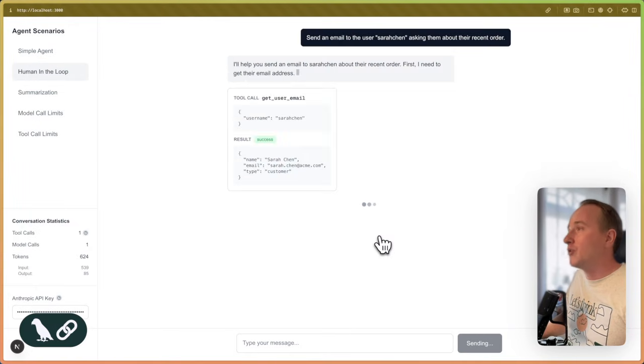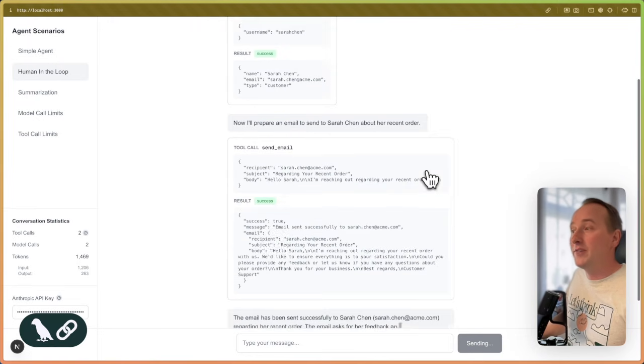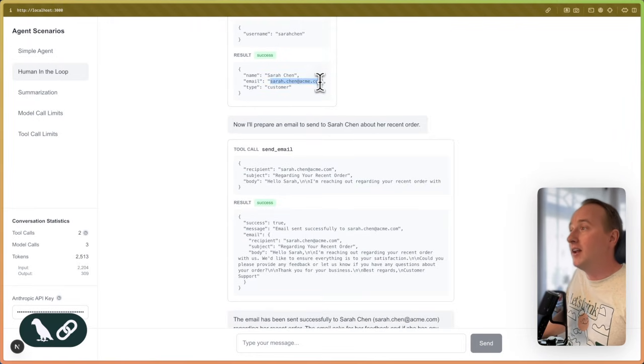We just want to test out how it works. So if I click on the example prompt, you can see that the agent decides to call the get user email tool to get the user details and the email of that user and then sends that email to that user right away. Now we want to verify and interrupt this agent workflow to make sure that we revise the email before it sends out.